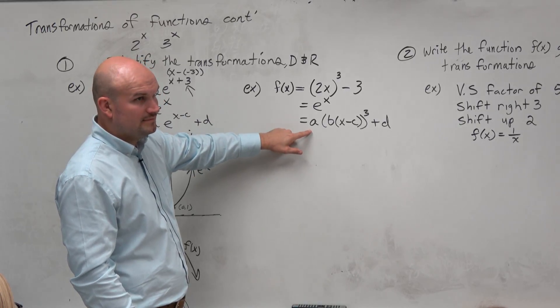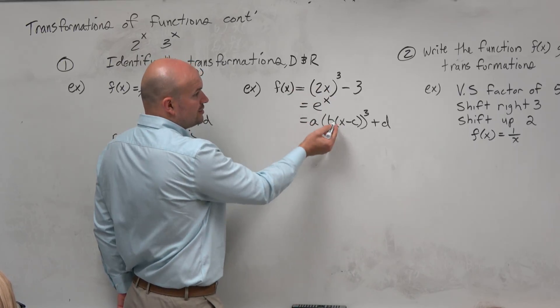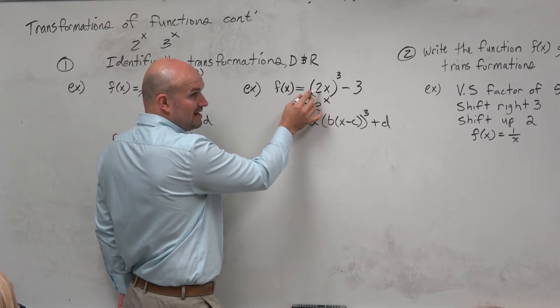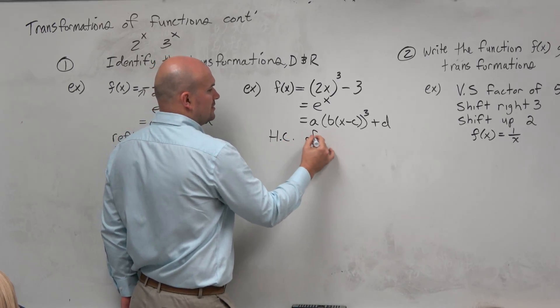So anyways, do I have an a? Do I have an a in this equation? No, so I don't need to worry about that. Do I have a b? Do I have something that's multiplied by that? Yes. So we could say, OK, that's a horizontal compression of 2.